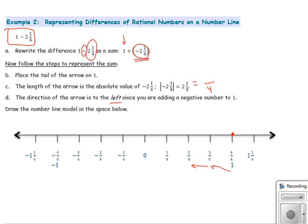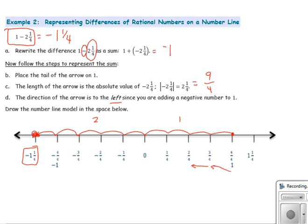2 and 1 fourth equals 9 fourths, so our arrow is 9 units long, with each unit being one fourth. Counting 9 fourths to the left from positive 1 — moving through 0 and continuing left — we travel a total of 9 fourths, which equals negative 2 and 1 fourth. The answer is where we end up on the number line, and the difference of 1 minus 2 and 1 fourth equals negative 1 and 1 fourth. We rewrote that as a sum, and the answer is negative 1 and 1 fourth.